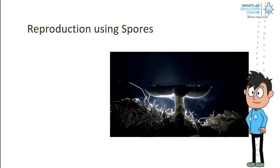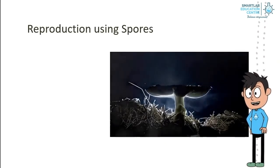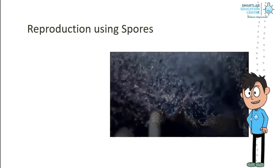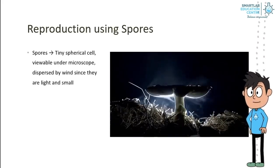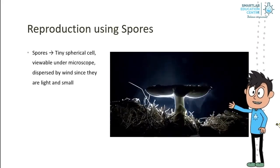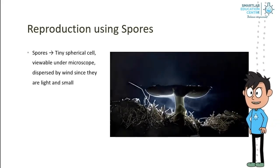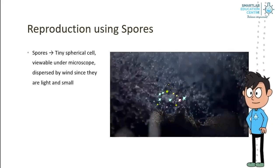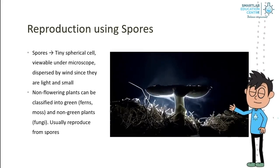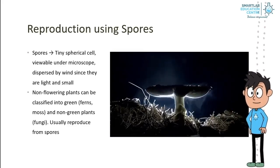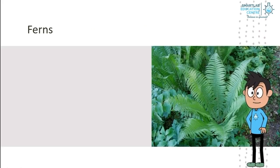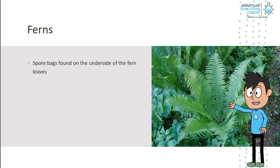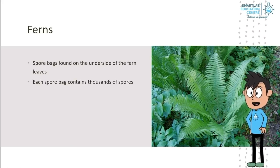Reproduction using spores. Non-flowering plants can be classified into green and non-green plants, and they all reproduce from spores. Spores are tiny spherical cells that can be seen under the microscope. They are dispersed by wind, as they are light and small. A common example of a green, non-flowering plant is ferns. They have spore bags found on the underside of the fern leaves. Each spore bag contains thousands of spores.